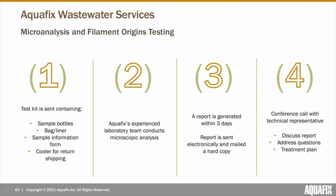If you'd like to utilize our microscopic analysis and filament identification services — whether there is a problem occurring or you'd like to establish a baseline — here's what you can expect. You will receive a cooler for return shipping with four sterile sample bottles, a bag to return them in, a liner for ice, and a form to fill out detailing the samples being sent in. It's important to send samples overnight and on ice. Once our lab receives the samples, we conduct detailed observations and generate a report, which will be sent to you electronically and in the mail. After receiving your report, a call with a technical representative from your state can be set up to discuss the findings and address any questions.